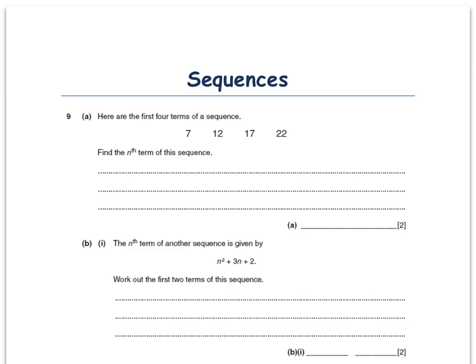So this means to find a rule for this sequence. Now if you look at this sequence you should spot that it's going up constantly by 5. So you add 5, add 5, add 5. If you're asked to find the next term you'd add 5 again and get 27.